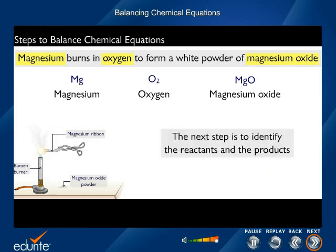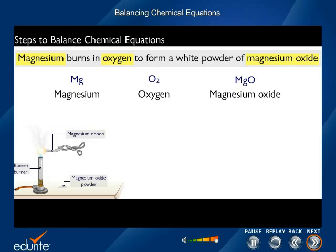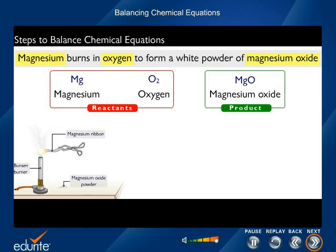Now, the next step is to identify the reactants and the products. Magnesium burns in oxygen. This means both are reactants. The new compound formed is MgO, the product.